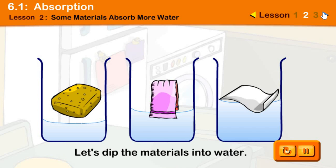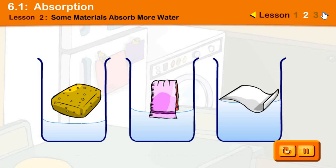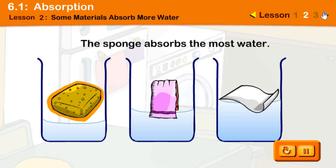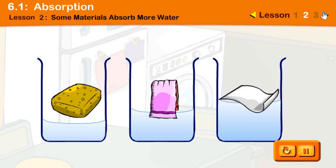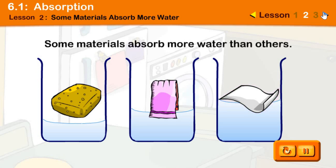The amount of water left in the glasses is not the same. The sponge absorbed the most water. The paper absorbed less water than the cloth and the sponge. This shows that some materials absorb more water than others.